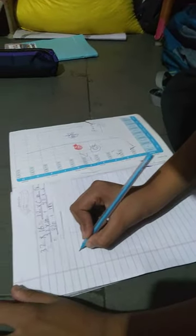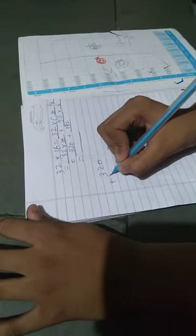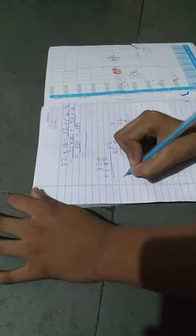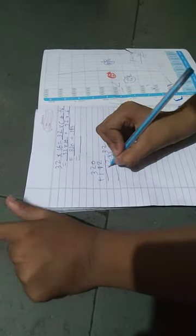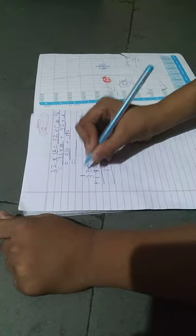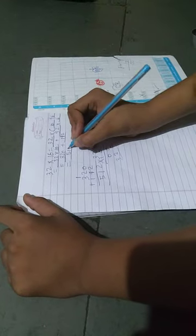So write 320 plus 192. Now plus it. The answer is 512.